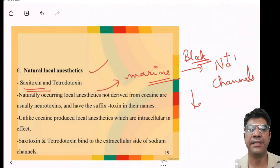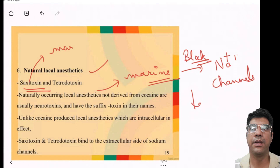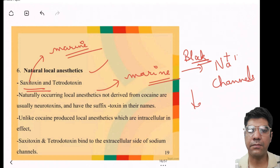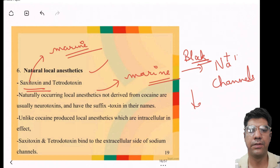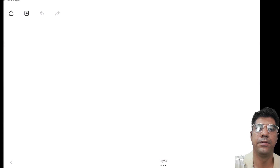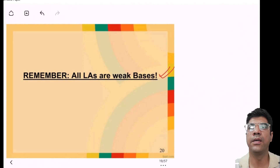The other natural agent is saxitoxin, a product obtained from certain species of marine dinoflagellates. It can accumulate in shellfish, making them toxic when consumed. Like tetrodotoxin, it has a similar mode of action. Remember that all local anesthetics are weak bases.